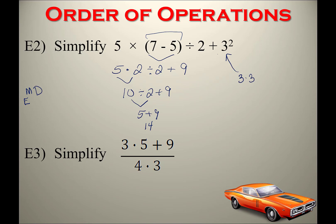The next example involves a fraction. The fraction bar acts as a grouping symbol, so simplify the numerator and denominator separately — you can work on both at the same time since they're grouped by the division bar. In the denominator, 4 times 3 is 12. In the numerator, multiplication comes first: 3 times 5 is 15, then add 9 to get 24. Finally, 24 divided by 12 equals 2.